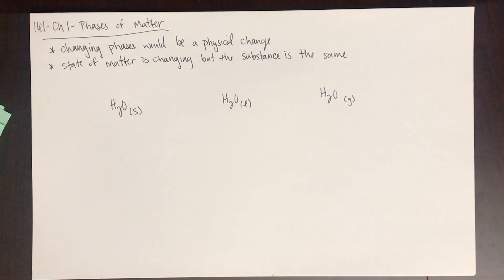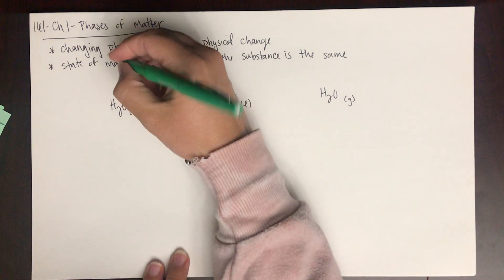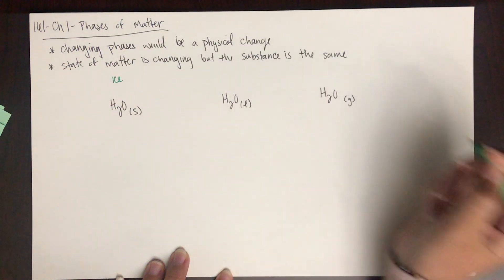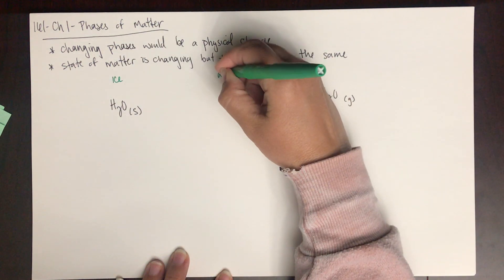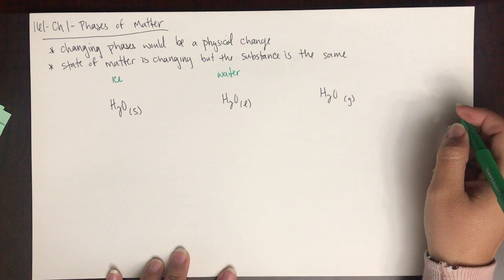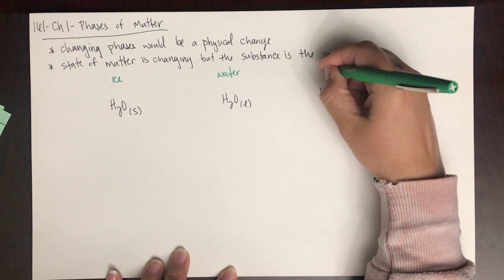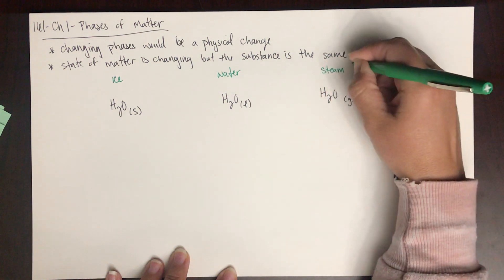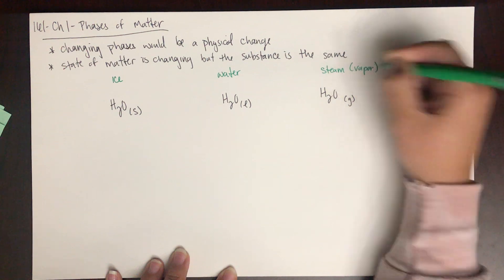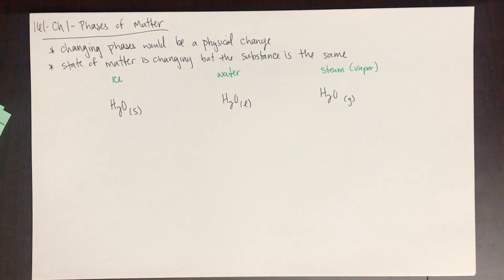What we would call solid water is ice, liquid water is just water, and gaseous water is steam or sometimes vapor.